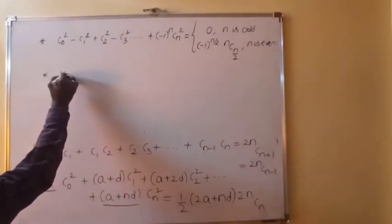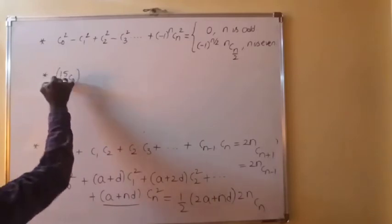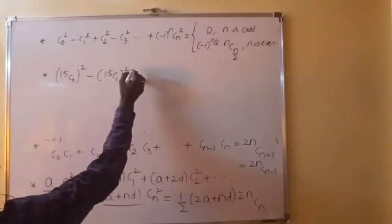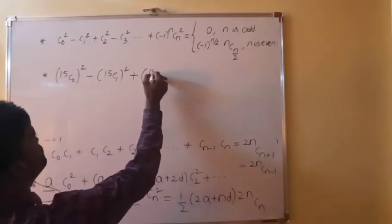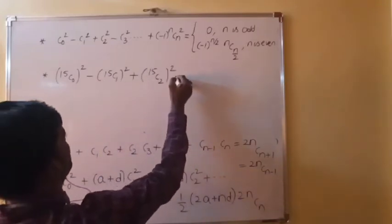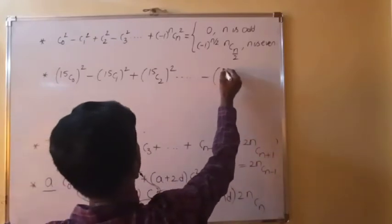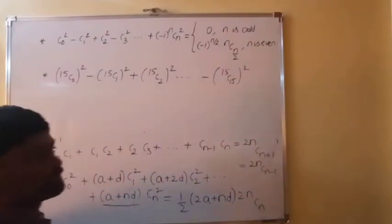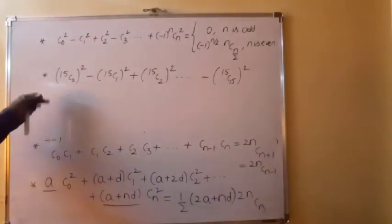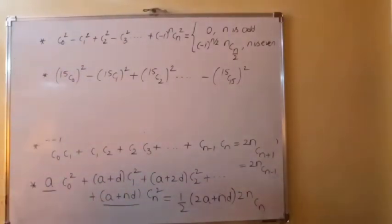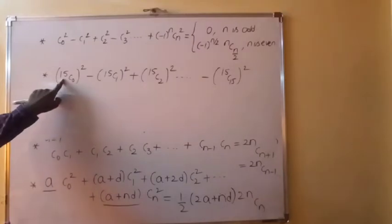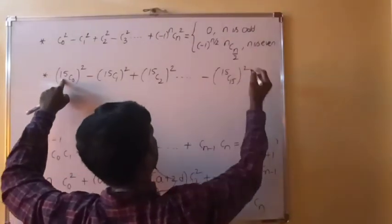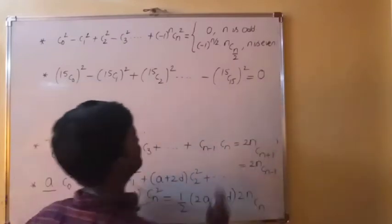Example: what is 15C0²−15C1²+15C2²−...−15C15²? Here N = 15, which is an odd number. Thus the whole sum becomes 0.